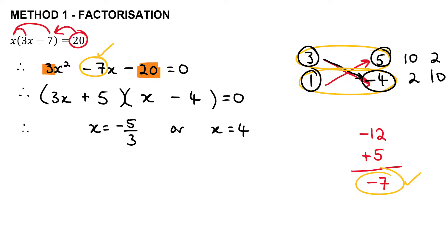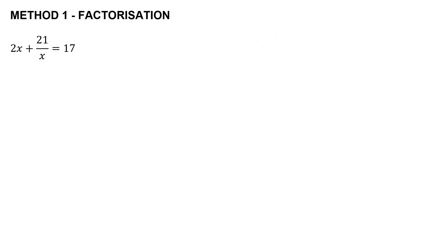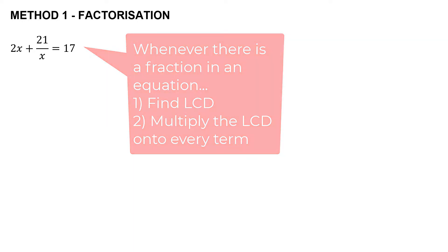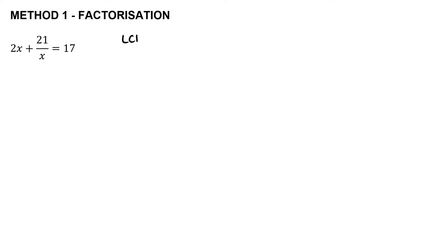The last example again uses factorization, but it doesn't immediately look like a quadratic equation because there's a fraction in the middle term. Whenever you have a fraction in an equation, find the LCD (lowest common denominator) and multiply it onto every term. In this case the LCD is x, and we multiply it onto the first, second, and third terms.